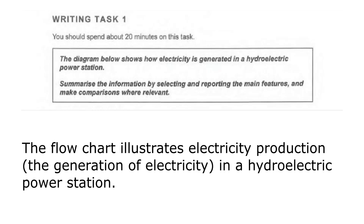Let's write the introduction. The prompt says: 'The diagram below shows how electricity is generated in a hydroelectric power station.' You can write: 'The flow chart illustrates electricity production, or the generation of electricity, in a hydroelectric power station.' We paraphrase 'diagram' into 'flow chart,' 'shows' into 'illustrates,' and 'how electricity is generated' into 'electricity production' or 'the generation of electricity.' We don't paraphrase 'hydroelectric power station' as there is no relevant paraphrase.